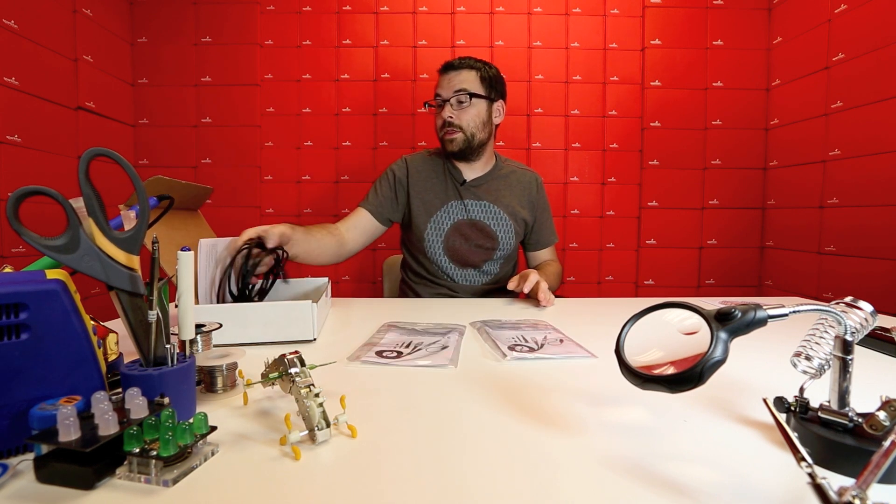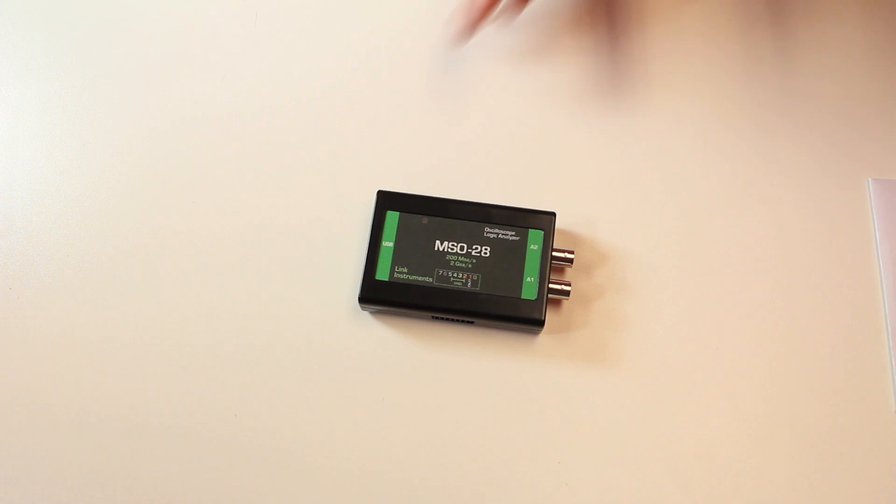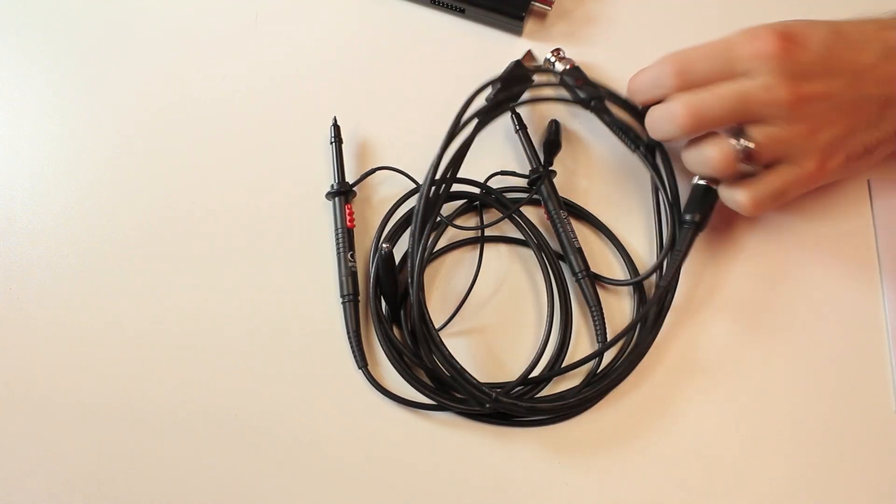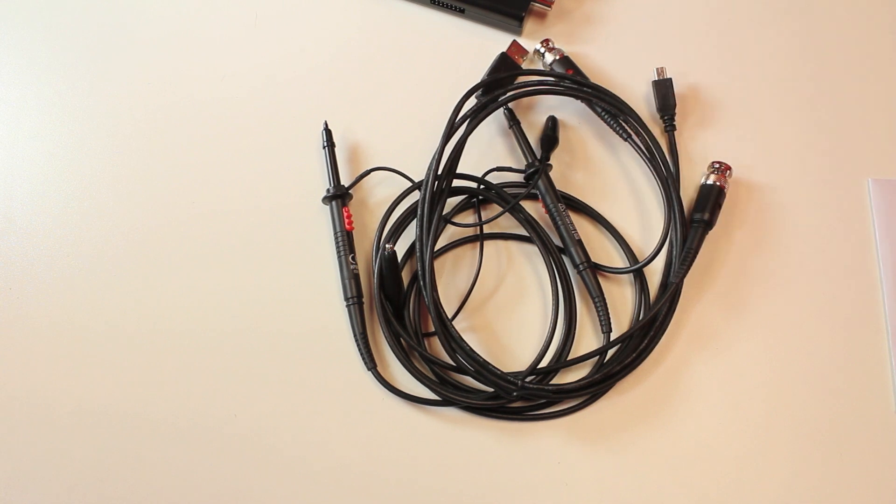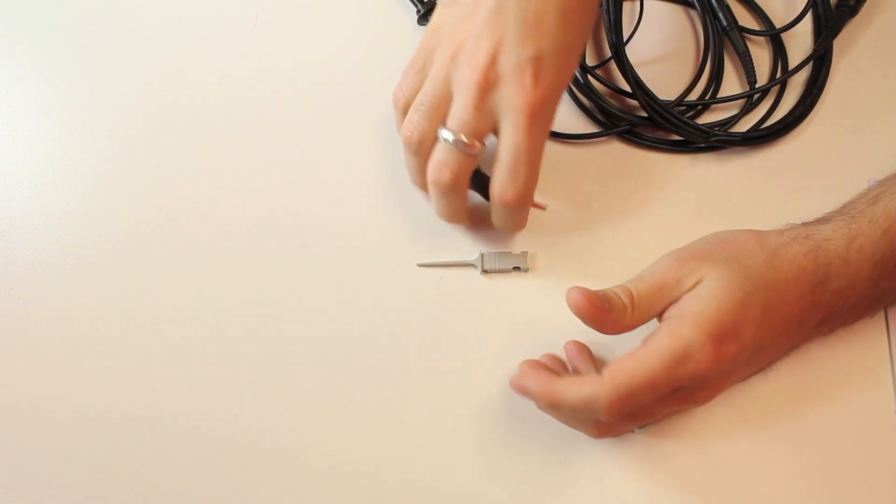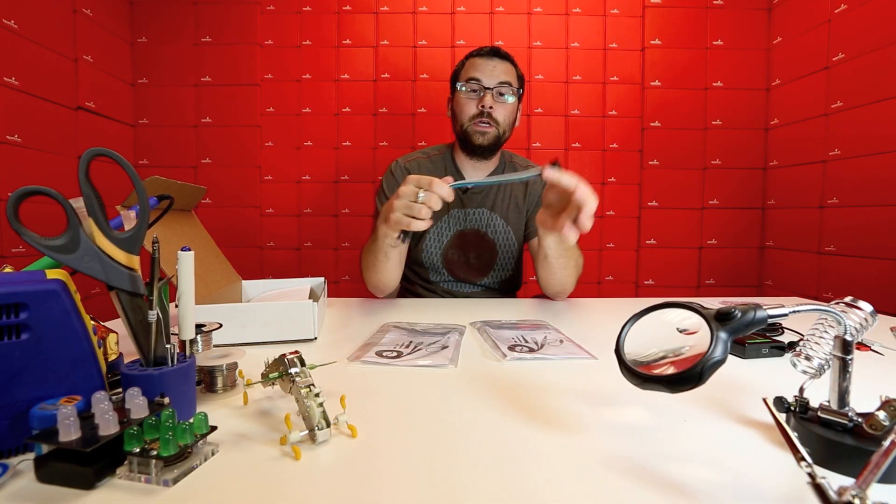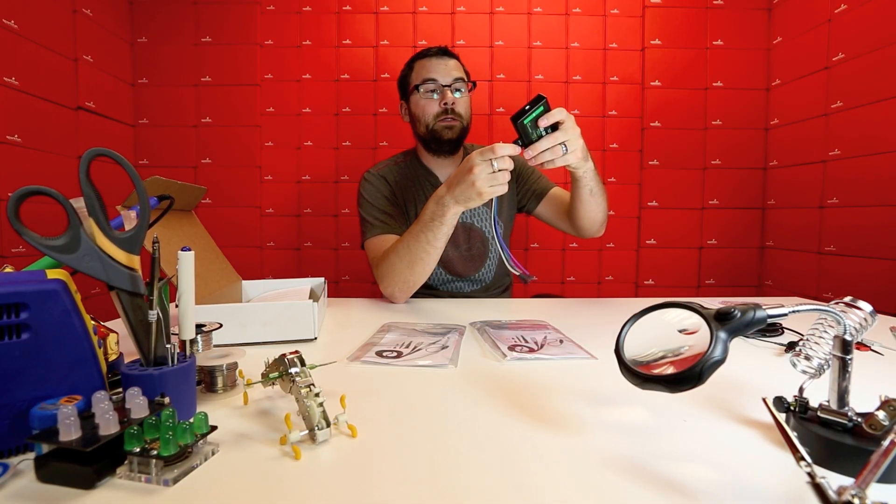So it comes with two sets of probes, there's a USB cable in here, we get a lot of these little IC hooks, these little guys, so there's a lot of those inside the package as well. And then you've got this little connector which connects into the bottom here and this is for your I squared C, SPI, and all your other stuff there.